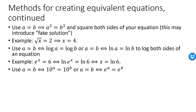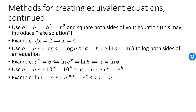We can also create an equivalent equation by exponentiating both sides. The equation ln x equals 4 is equivalent to e^(ln x) equals e^4, giving x equals e^4.